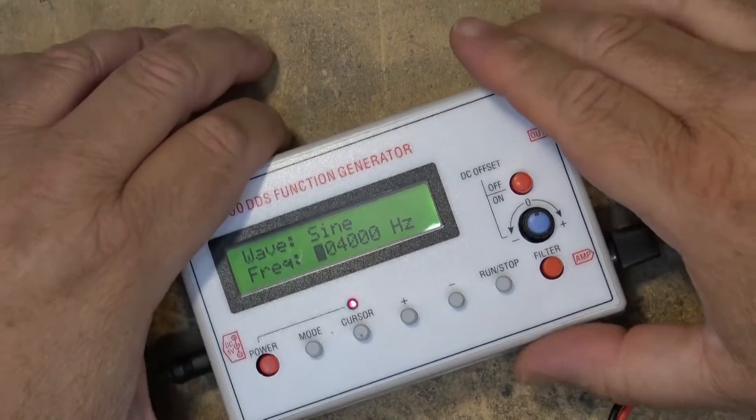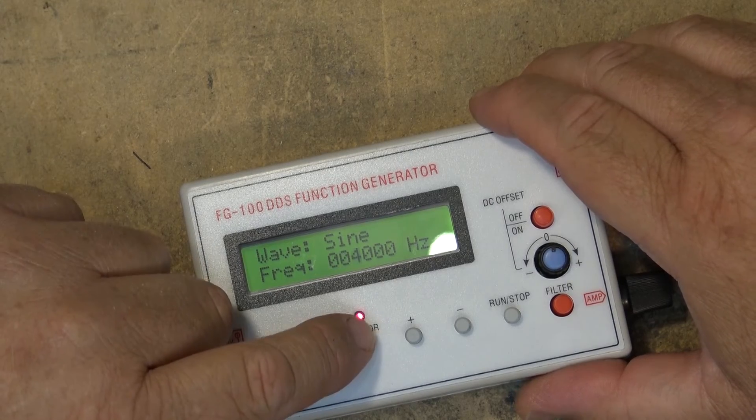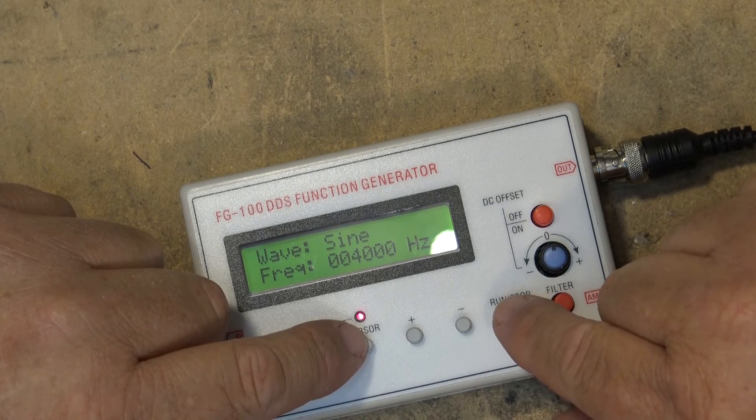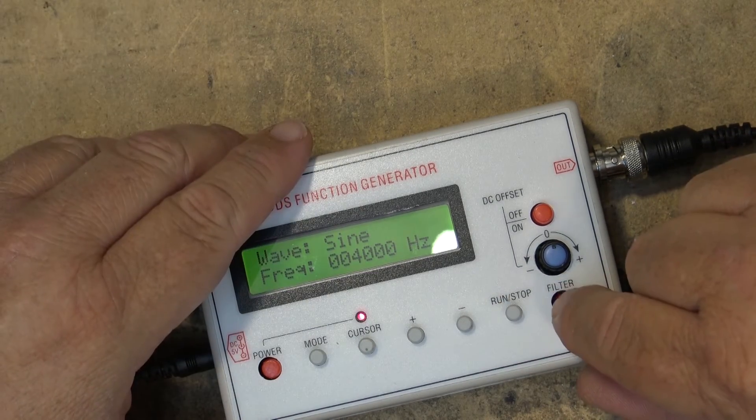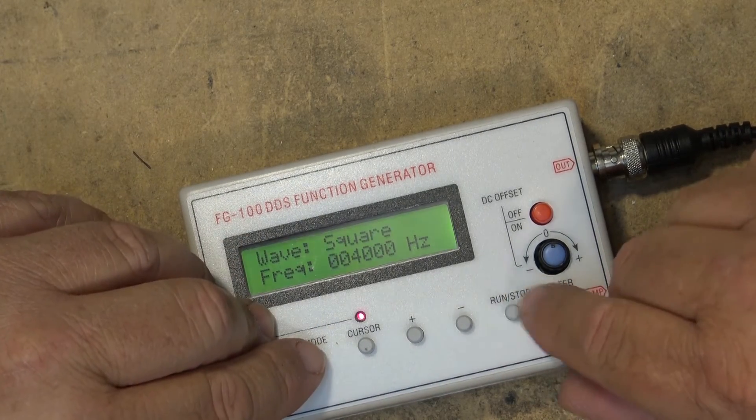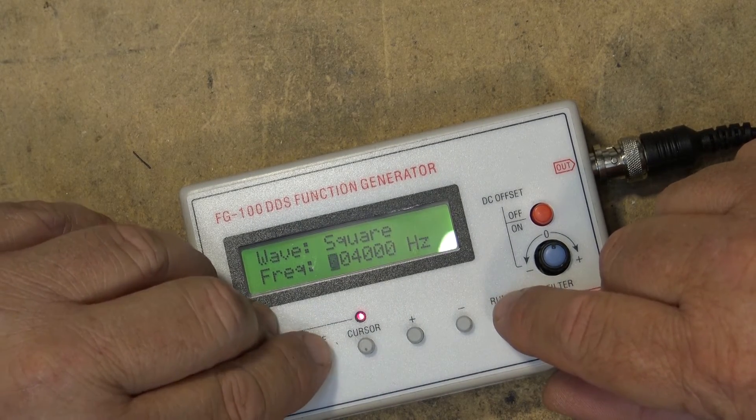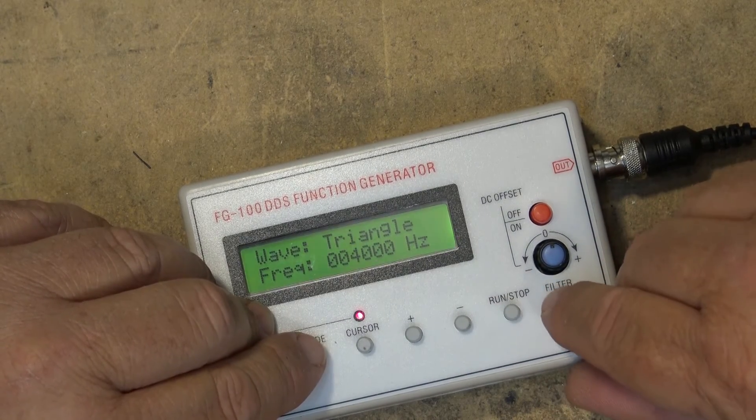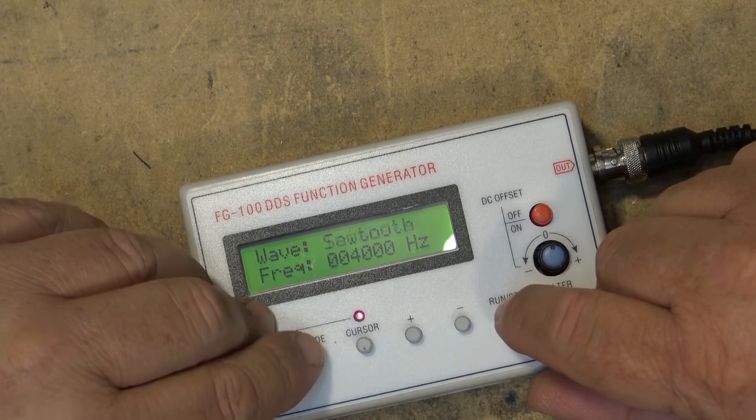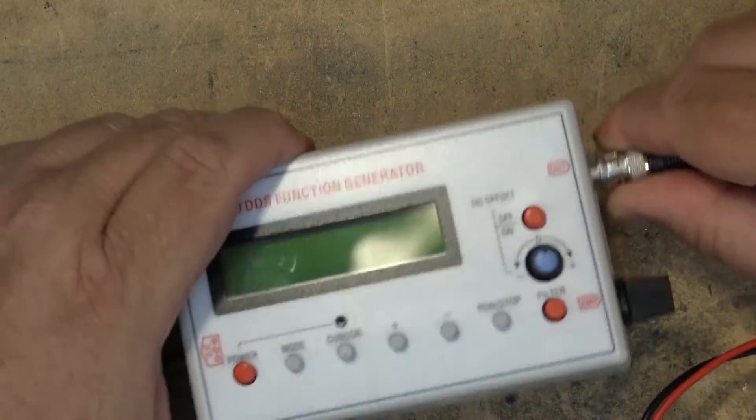So, in reality, it is what it is. Let's take it apart. So as I say, setting it is really quite simple. Cursor moves over your display and then you just up and down to the frequency you want. Run and stop. There's a filter button here. I don't see what the filter seems to do much. Does it do anything in other modes? I don't see anything that this filter is doing. I don't see any difference it's making on the waveform. The DC offset, well, we saw what that did. Let's take this thing apart and see what's inside it.